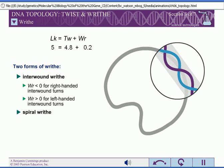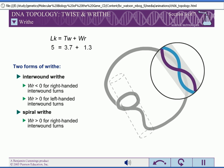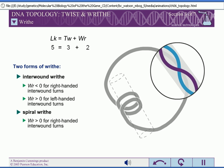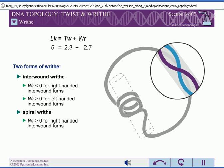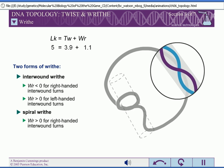If right-handed DNA writhes to form a right-handed spiral coil, the twist number decreases. Therefore, right-handed spiral turns are assigned positive writhing numbers. Note that this is the opposite of right-handed interwound turns.